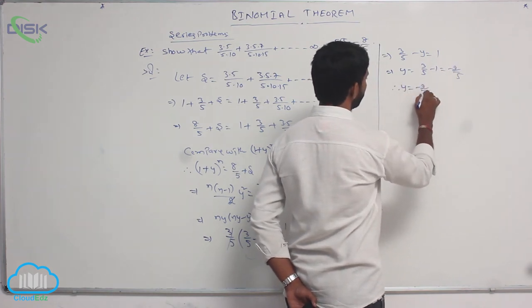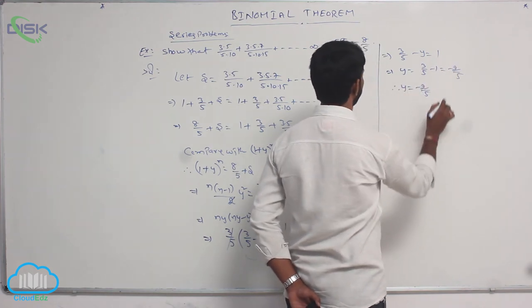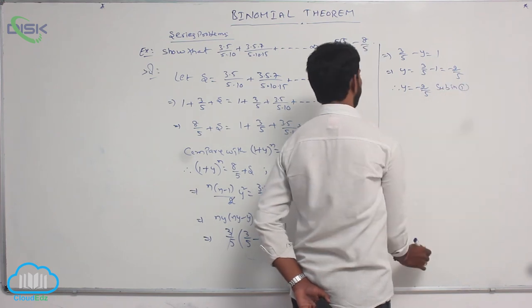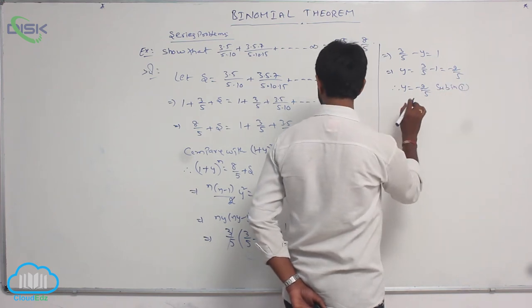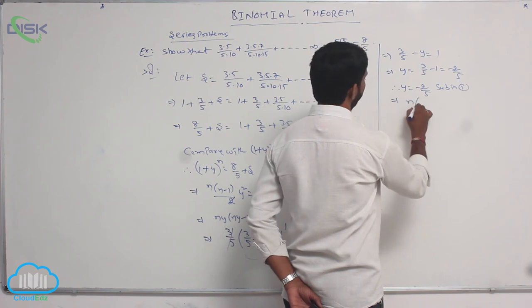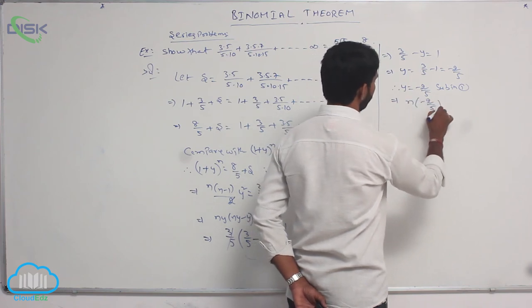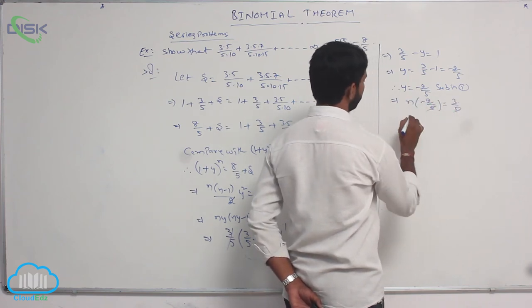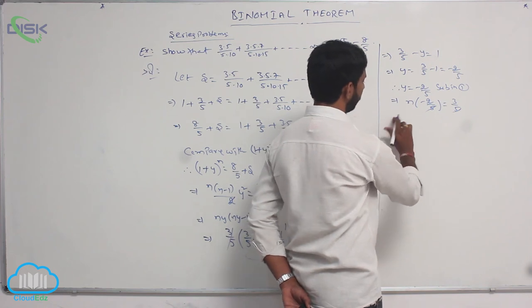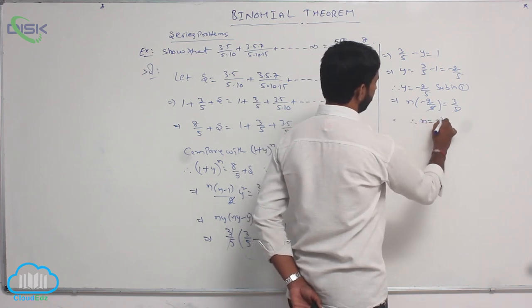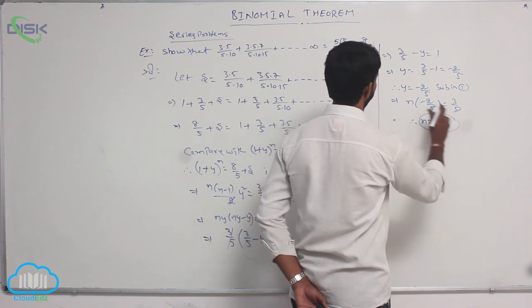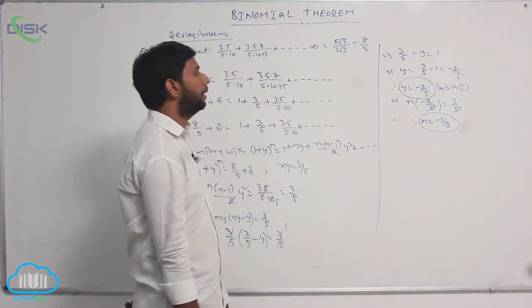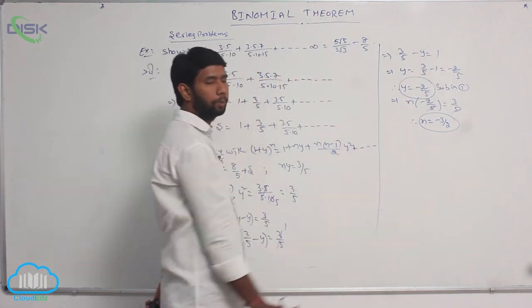If y = -2/5, substitute in condition 1: n · (-2/5) = 3/5. Here the 5s cancel, therefore n = -3/2. So y = -2/5 and n = -3/2.